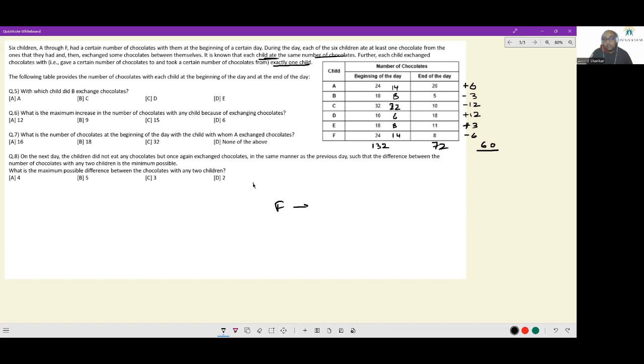F gave chocolates to A and he gave 6 chocolates away. Similarly, B gave chocolates to E and he gave away 3 chocolates. And finally, the only 2 people left are C and D. C gave 12 chocolates to D. These are the 3 pairings that are existing. We have done pretty much all the processing. Let's get to individual questions.